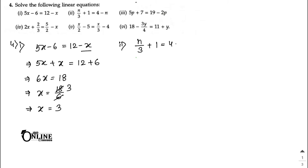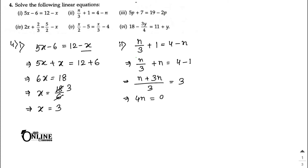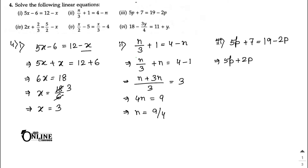Number two: n/3 + 1 = 4 − n. Rearranging, n/3 + n = 4 − 1 = 3. Taking LCM as 3: n + 3n = 9, so 4n = 9, giving n = 9/4. Number three: 5p + 7 = 19 − 2p. So 5p + 2p = 19 − 7 = 12, then 7p = 12, giving p = 12/7.